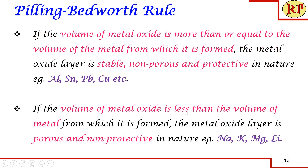If the volume of the metal oxide is less than the volume of the metal from which it is formed, the metal oxide layer is porous and non-protective in nature. If it is less, that means it is very loosely packed and not very dense, so oxygen can very easily penetrate through this porous layer and the metal undergoes further corrosion. This happens in sodium, potassium, magnesium, lithium, etc. So based on the ratio of the volume of metal oxide to the volume of the metal, we can tell whether it will form a protective or non-protective metal oxide layer.